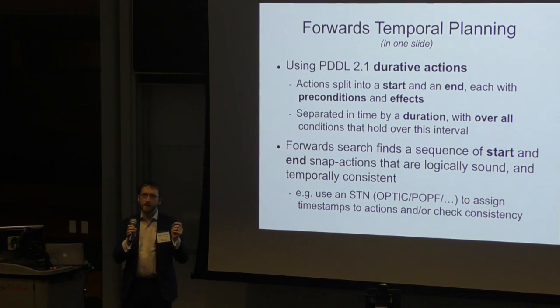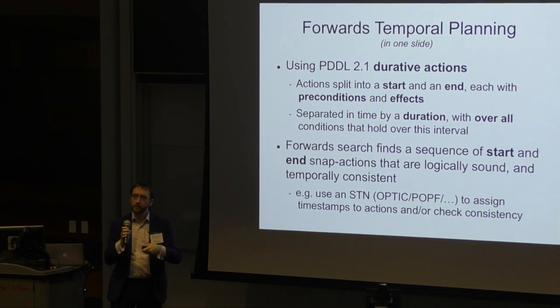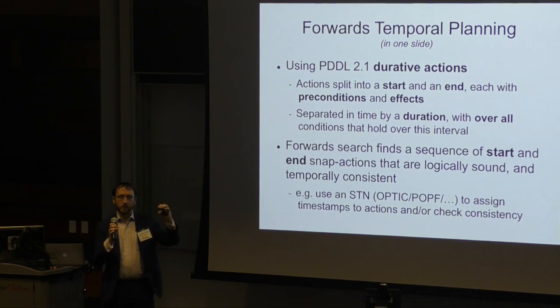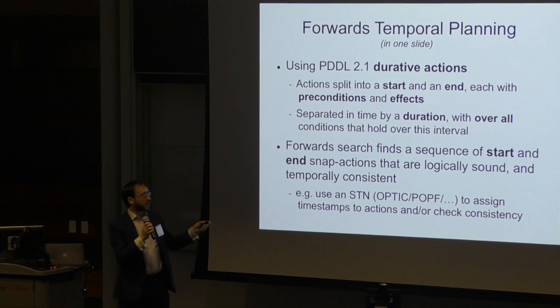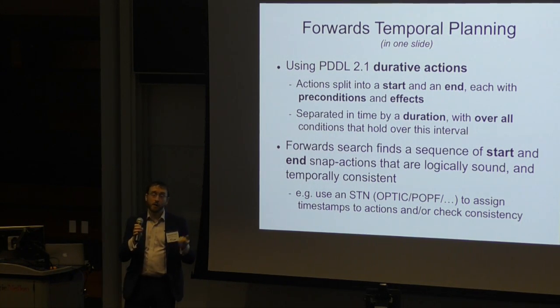To solve these problems we can see it as an extension of forwards planning we would do for classical planning. We're finding a sequence of actions but now they're the starts and ends of actions. They have to be logically sound, so we have to meet our preconditions with the effects of the actions we put in. But now additionally we have temporal constraints due to the duration of the actions and due to the orderings we have to put in. To check the temporal side of things we use STNs. We love STNs in our work. Essentially you can package up the temporal constraints into an STN and it will tell you if you have respected your temporal constraints or not.